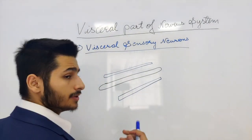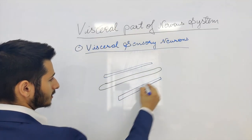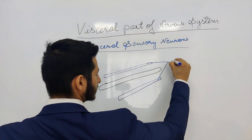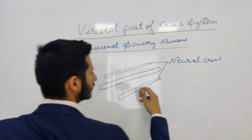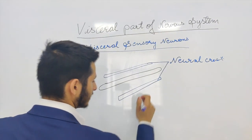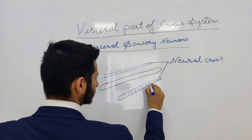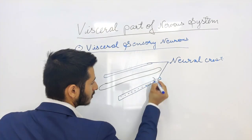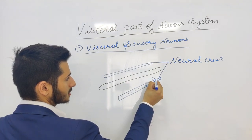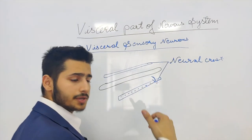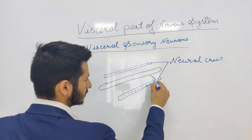The visceral sensory neurons arise from the neural crest cells. The cells of the neural crest give rise to visceral sensory neurons. These neurons send out their processes medially — that is, towards the neural tube — and laterally to the associated regions.